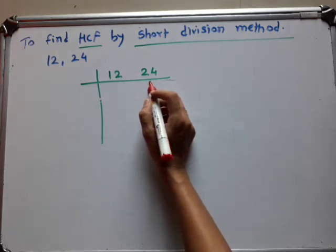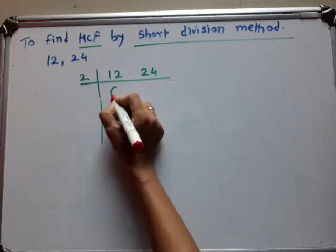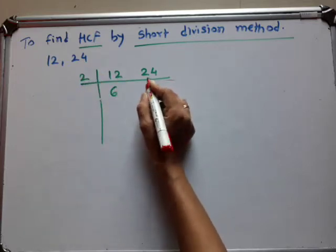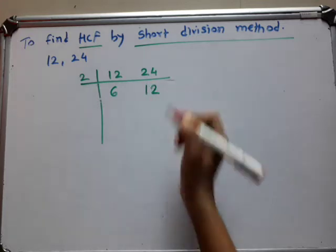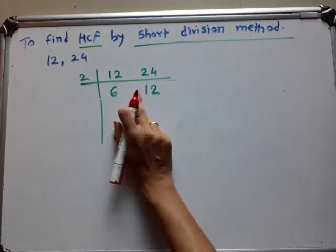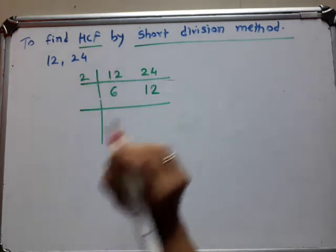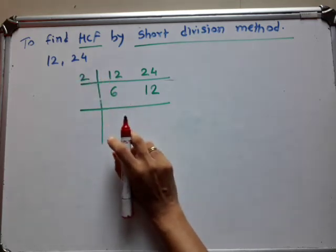And 2 is the first smallest prime number. So 2 times 6 are 12, and 2 times 12 are 24. So here we write the quotient here.